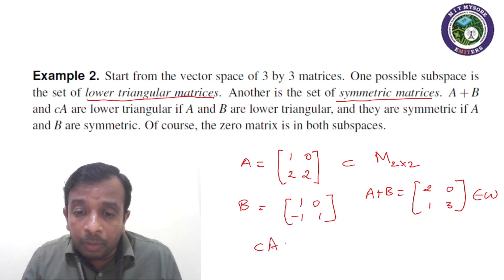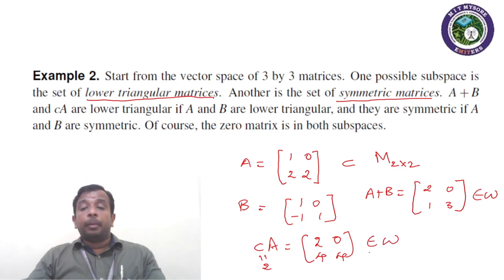Say if I take C is equal to 2, then 2, 0, 4, 4, this is also a lower triangular matrix belonging to the subset of lower triangular matrices, which is subset of M. Hence, set of lower triangular matrices is a subspace. Hope the concept of subspace is clear.